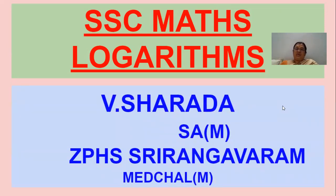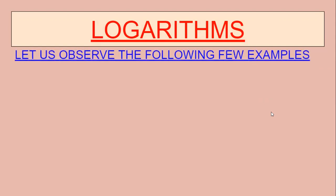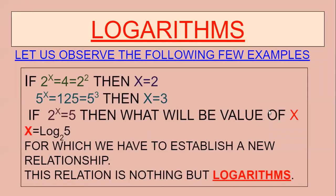Before moving on to the concept, let us discuss a few examples. As we know, if 2 to the power of x is equal to 4, then 4 can be written as 2 to the power of 2. Here the bases are equal, so the powers will also be equal, therefore x is equal to 2.